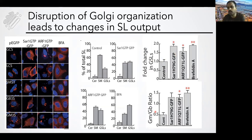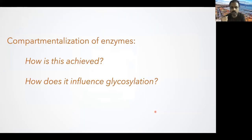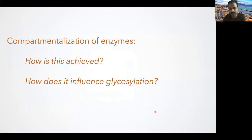What we conclude from this simple experiment is that the organization of the Golgi into compartments is necessary to produce a certain quantity of sphingolipids. It doesn't change the type of sphingolipids that are produced, but the amount is changed. The next question was how is this compartmentalization of the enzymes achieved and how does it actually influence the glycosylation of sphingolipids?